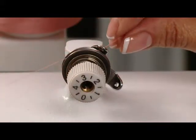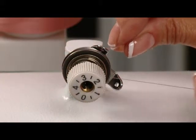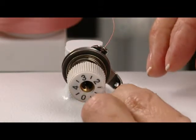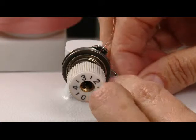Pull the thread towards the front of the machine into the tension disc, looping back around to the back and into the second hole on your thread guide.